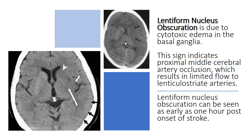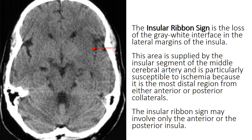Lentiform nucleus obscuration can be seen as early as one hour post onset of stroke. The insular ribbon sign is the loss of the gray-white interface in the lateral margins of the insula. This area is supplied by the insular segment of the middle cerebral artery and is particularly susceptible to ischemia because it is the most distal region from either anterior or posterior collaterals. The insular ribbon sign may involve only the anterior or the posterior insula.